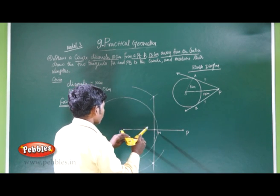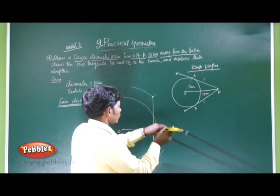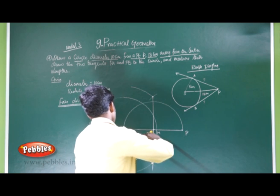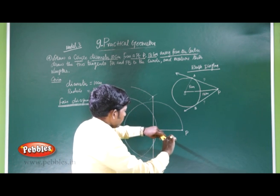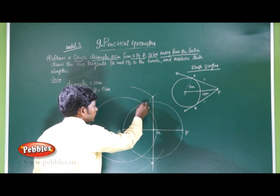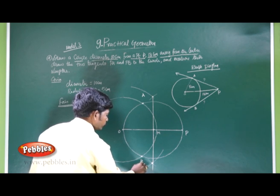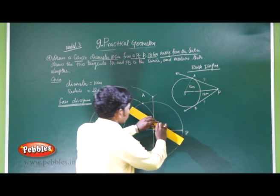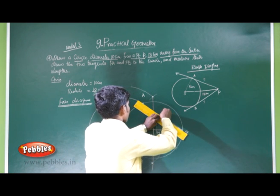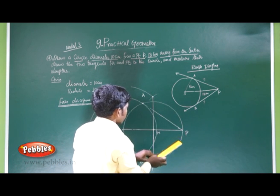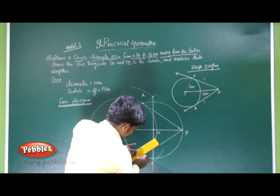With M as the centre, draw another circle. The two arcs intersect the circle at two points A and B. Join PA and join PB to produce the tangents.